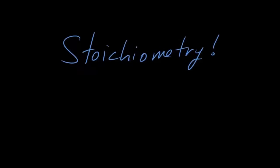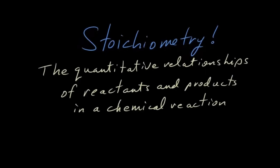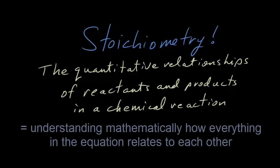This is a tutorial on stoichiometry. Stoichiometry is basically defined as the quantitative relationships of reactants and products in a chemical reaction. So what exactly does that mean, and how can we understand mathematically how everything written in the chemical equation relates to each other?